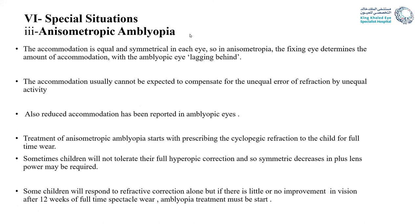In isometropia with amblyopia: accommodation is equal and symmetrical in both eyes. The fixing eye determines the amount of accommodation and the amblyopic eye lags behind. Accommodation cannot be expected to compensate for unequal refractive error by unequal activity. Also, the amblyopic eye usually has less accommodation than the normal eye. For treatment of anisometropia, start with cycloplegic refraction. After 12 weeks, if visual acuity is completely improved, no amblyopia treatment is needed. If a difference in visual acuity persists, start amblyopia treatment. Sometimes children with high hyperopic correction cannot tolerate it initially — we symmetrically decrease the plus power in both eyes.